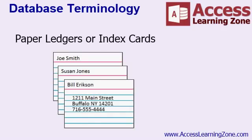In the days before computers, data would be stored on paper, usually in a ledger book or on index cards. For example, to keep track of your customers, you'd make a series of index cards with one customer per card. You'd have a separate drawer of cards for the products that you sold or the suppliers that you did business with. However, as efficient as this may have seemed at the time, it was very time consuming to sort through the cards or to search through a large drawer of cards for some particular bit of information.